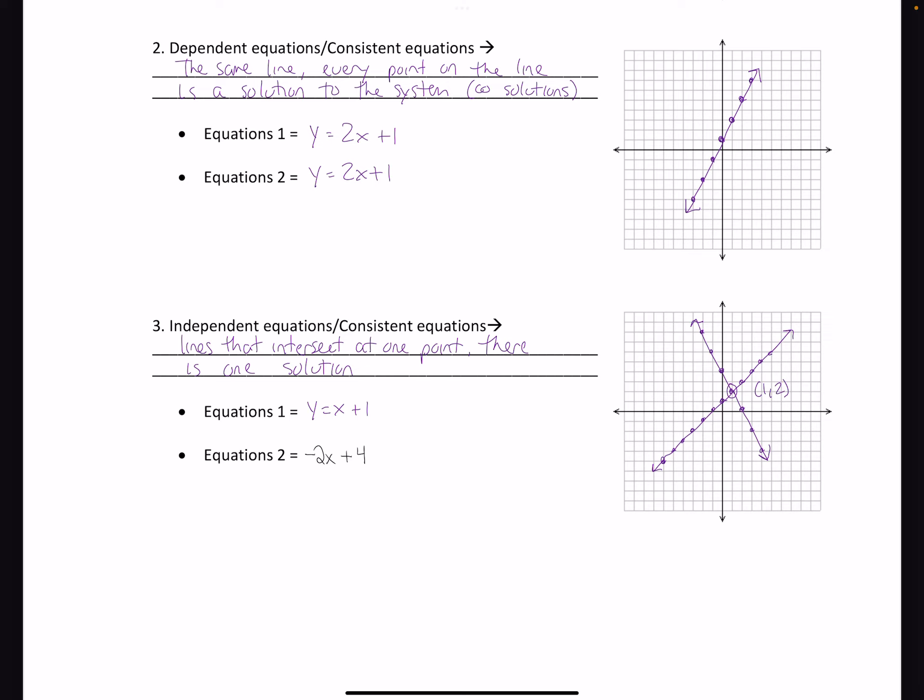My setup was y equals x plus 1, y equals negative 2x plus 4, it crossed, and we got our answer to that system at 1 comma 2, is a one point answer.